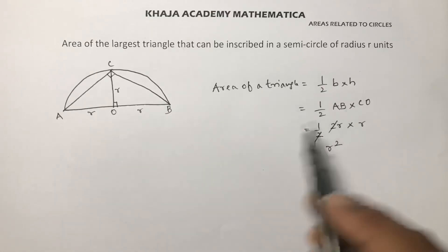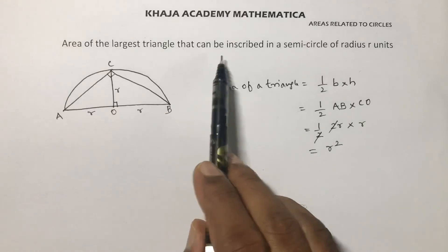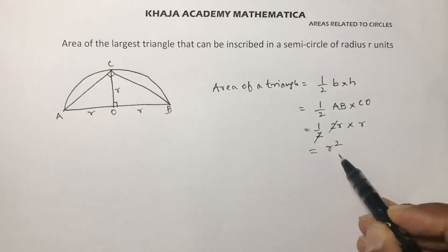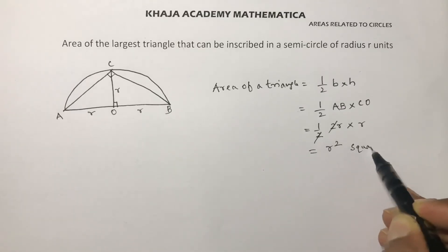R squared. So the area of the largest triangle that can be inscribed in a semicircle of radius R is R squared square units.